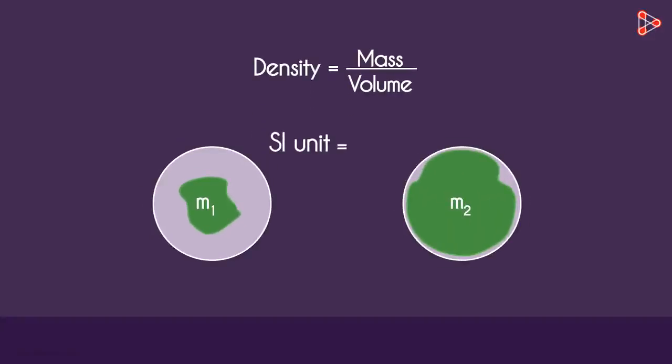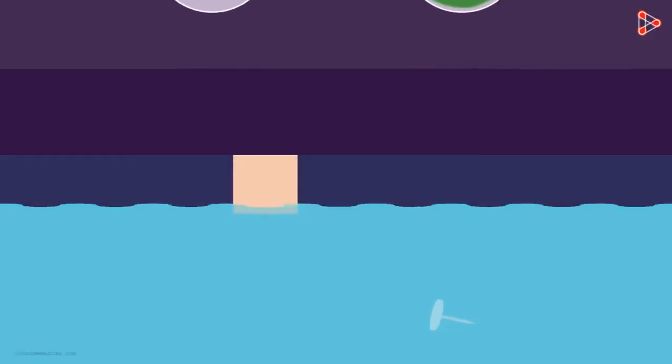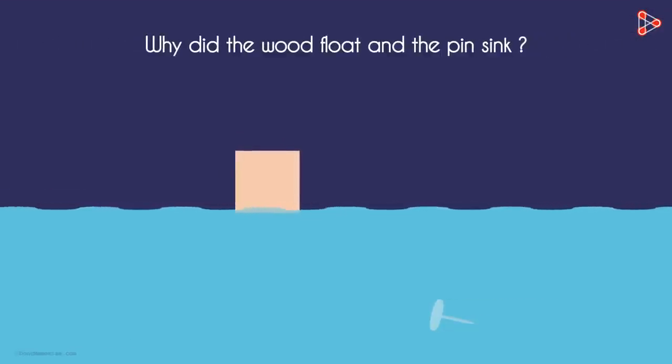The unit of density is kilogram per meter cubed. Mass is in kilograms and volume in meter cubed. Coming back to our example, why did the wood float and the pin sink?